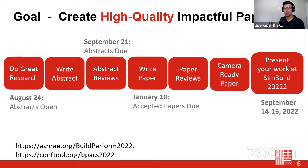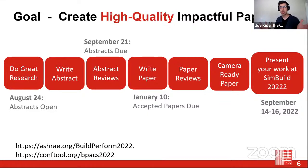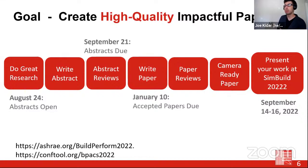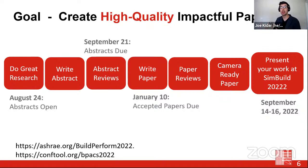You'll write your abstract and it will be reviewed — a go or no-go to write a full paper. Then you write the full paper, get reviews back, integrate that feedback, prepare a camera-ready paper if accepted, and present your work at a conference like SimBuild or BuildSim. Today we're really focusing on the abstract part: what goes into a good abstract and how to write one.